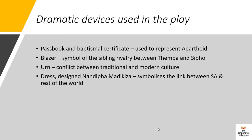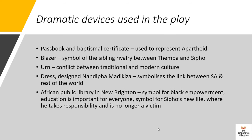The wedding dress that Tando is to wear, designed by Nandipa Madikiza, symbolizes the link between South Africa and the rest of the world, because Mandisa is a fashion student in the UK who is fascinated by this African design and adopts it in her practice. That is how there is a link between South Africa and the rest of the world in terms of fashion. Also, in the play there is an African public library built in New Brighton — the first African public library. This is a symbol for black empowerment, as well as a symbol that says education is important for everyone. It's a symbol for the new life that Sipo now lives, where he takes responsibility and is no longer a victim.